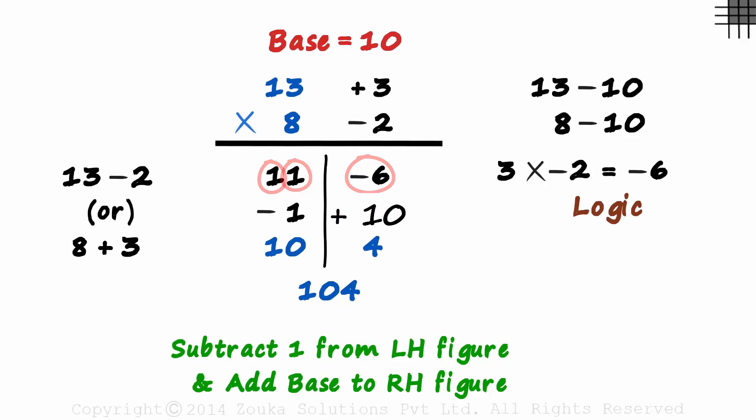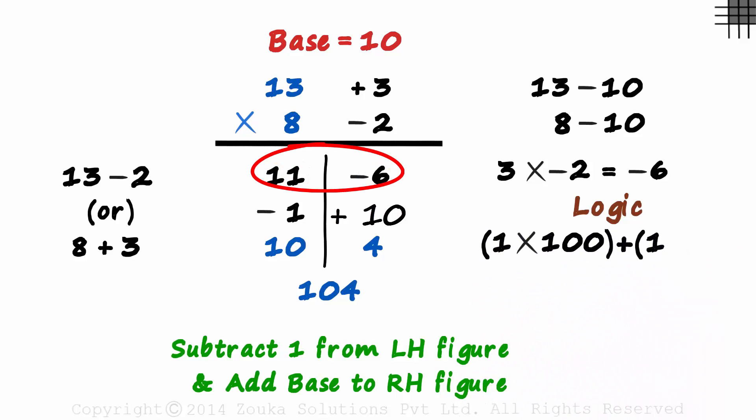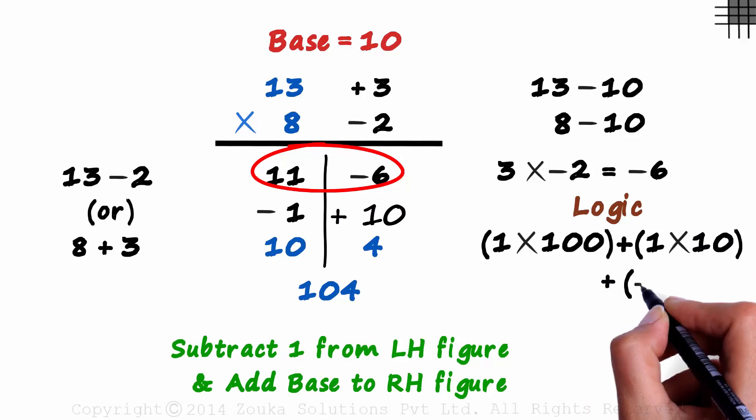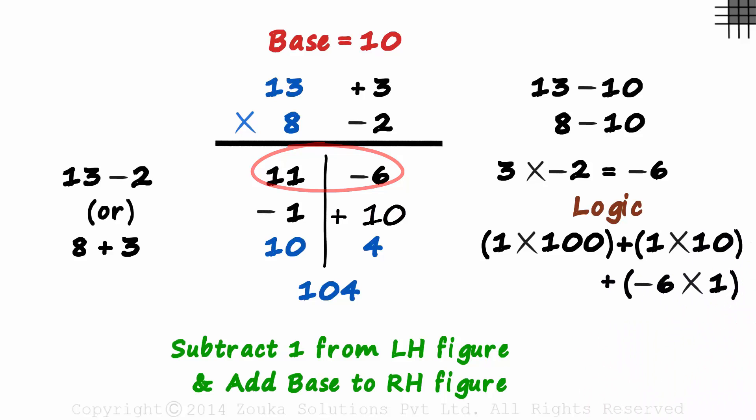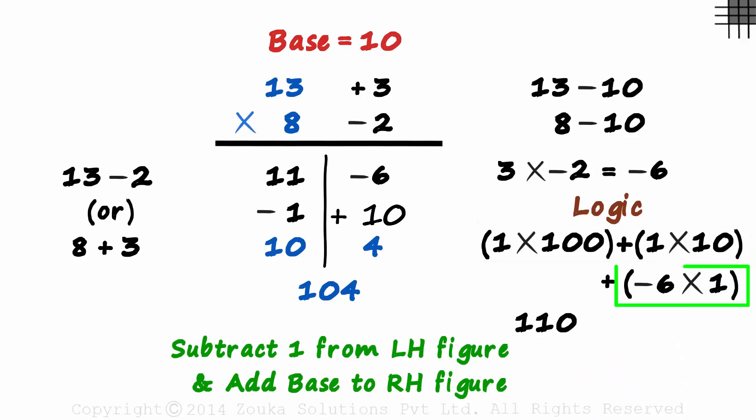So in place value terms, this can be written as 1 multiplied by 100 plus 1 multiplied by 10 plus minus 6 multiplied by 1. We just multiplied each digit with its place value. 100 plus 10 is 110 and minus 6 times 1 is minus 6. 110 minus 6 will equal 104.